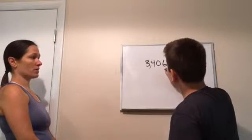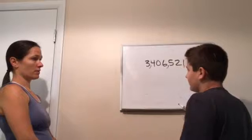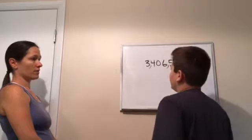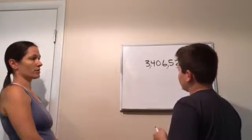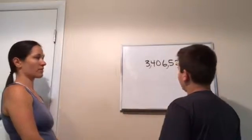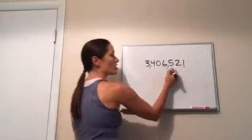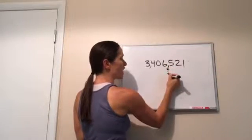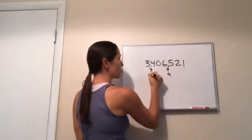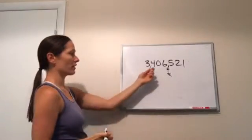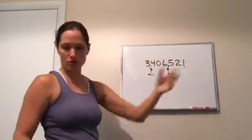So it would be three million, four hundred and six thousand and five hundred and twenty-one. Excellent job. He did it just right. So this one, that comma was for thousand and this comma was for million. So he read out three million, four hundred and six thousand and five hundred and twenty-one. Very good.